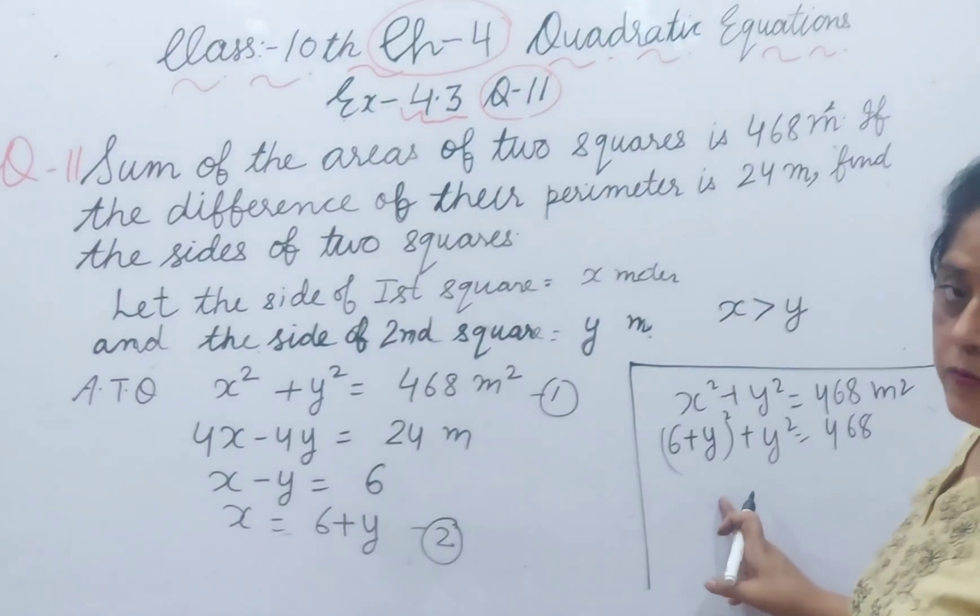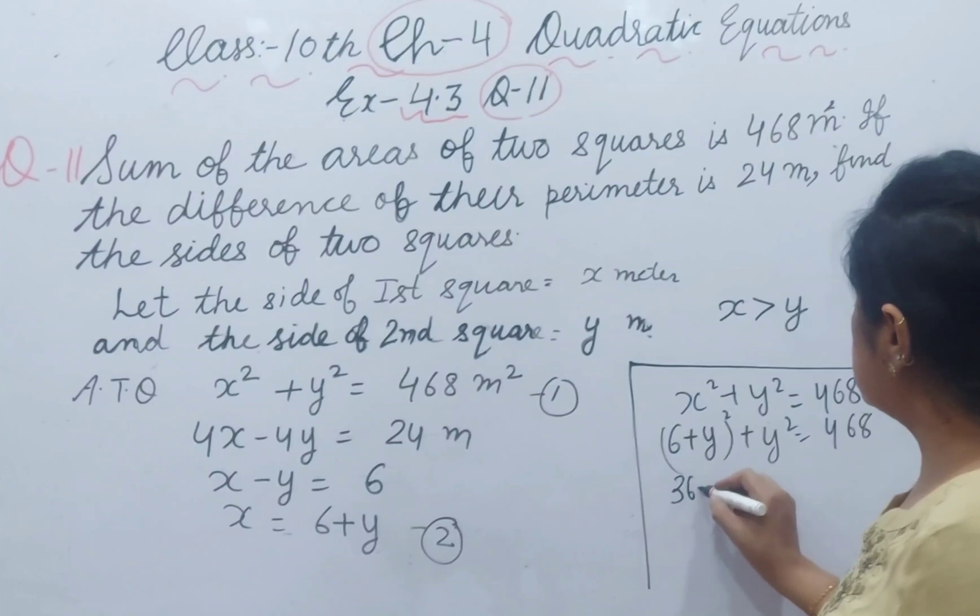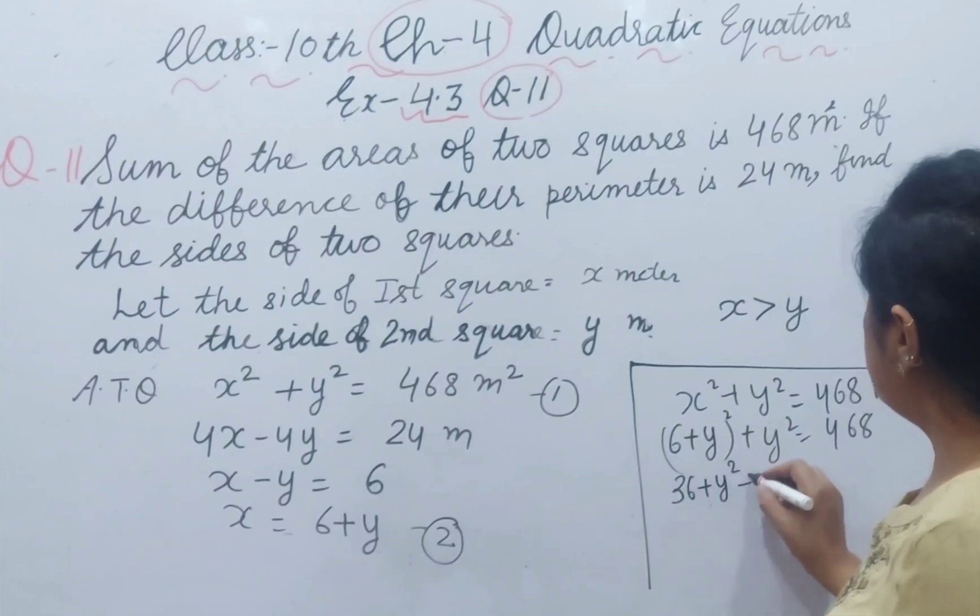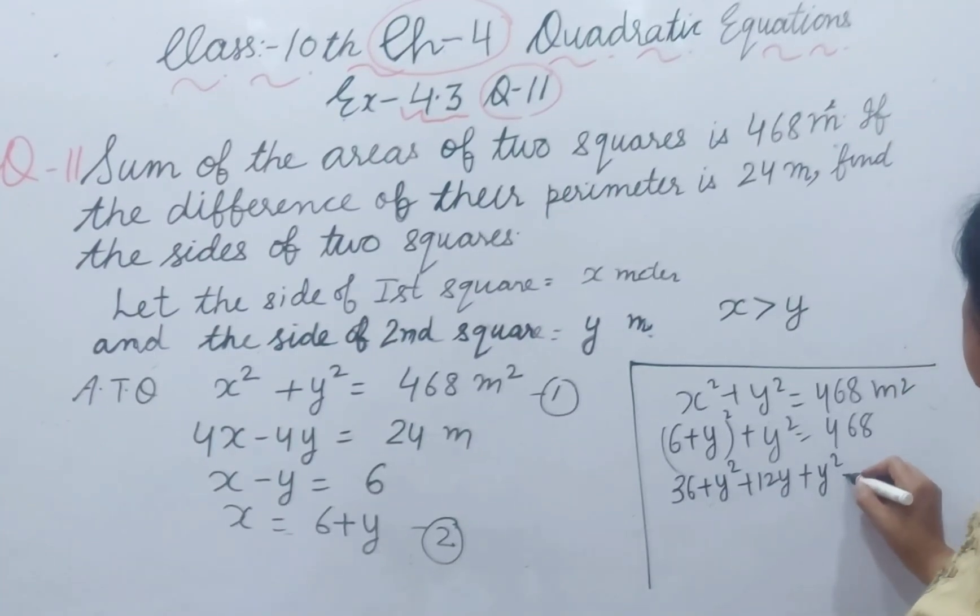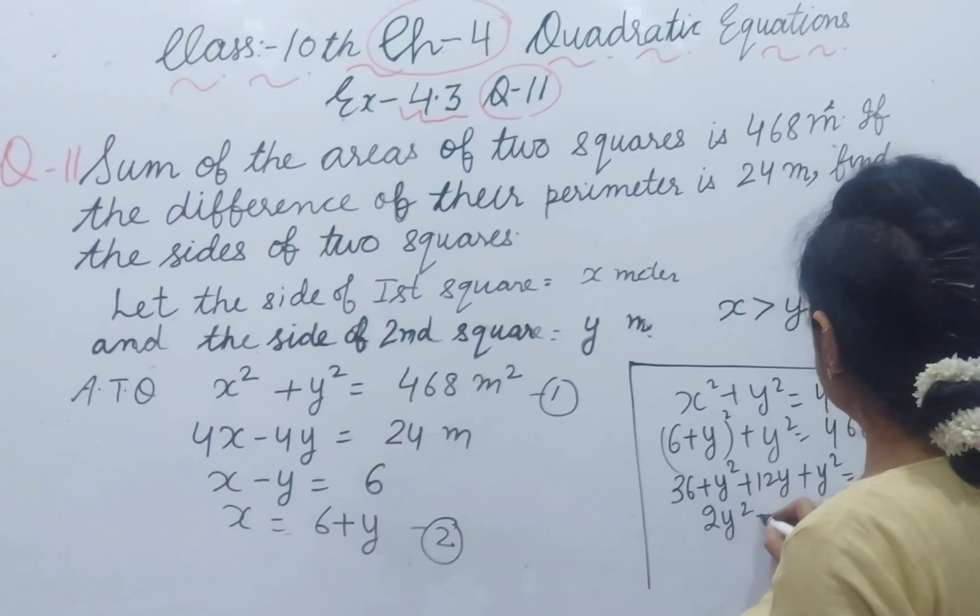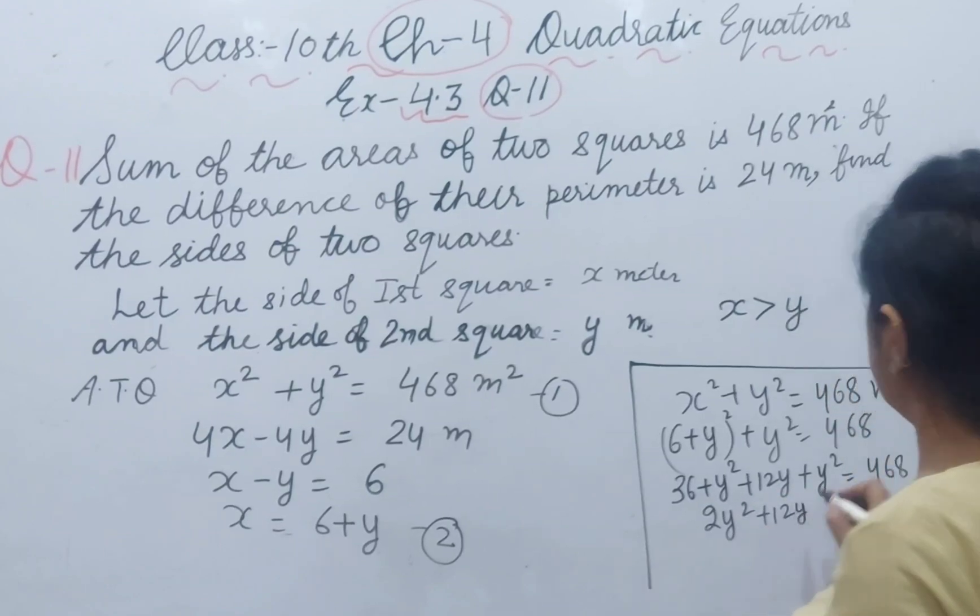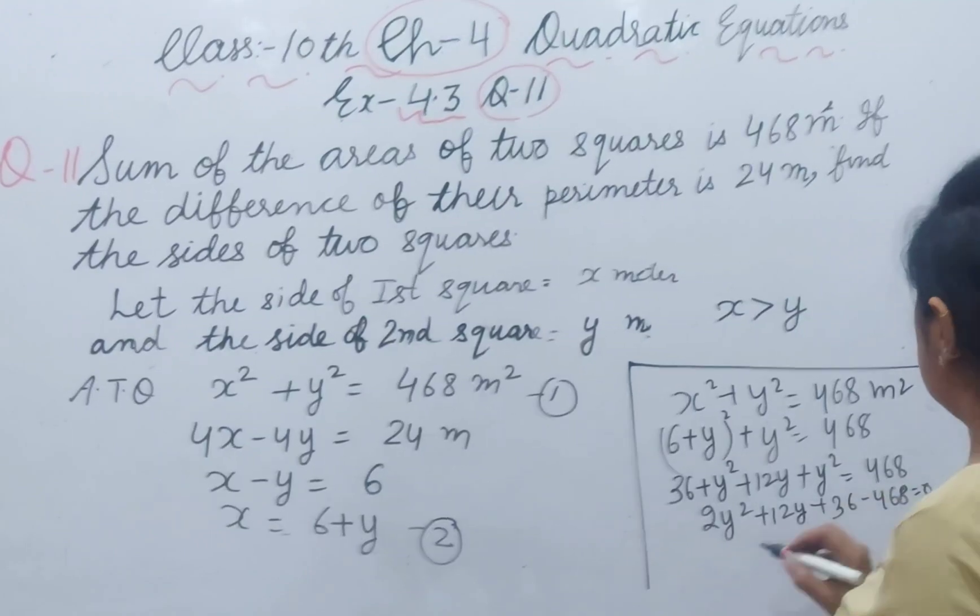A plus b whole square formula: a square plus b square plus 2ab. 36 plus y square plus 12y plus y square equal to 468. 2y square plus 12y plus 36 minus 468 equal to 0.